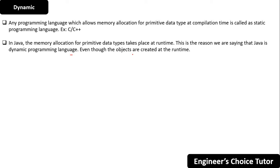Even the objects are created at runtime. So in static languages, memory allocation for primitive data types happens at compilation time, but in the dynamic case it happens at runtime at the time of creating an object.